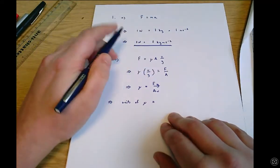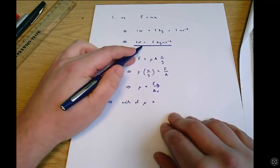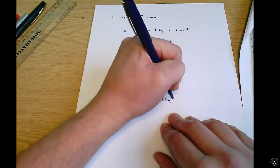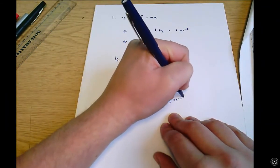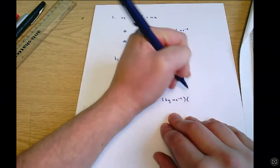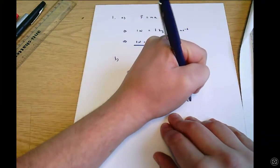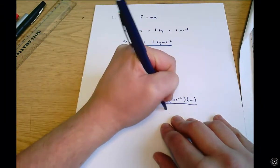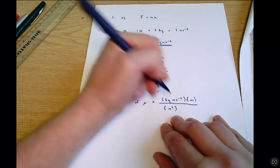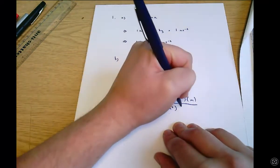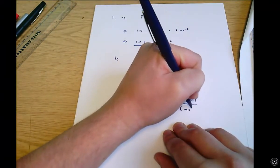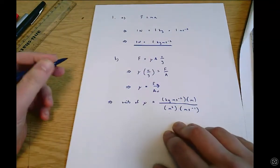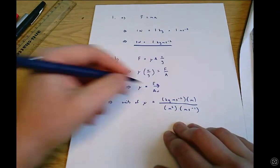F we know from earlier on up here it has units of kilograms meters per second to the minus two. y we're told is a distance and distances have units of meters. a is an area, areas have units of square meters and u is a speed and speeds have units of meters per second.